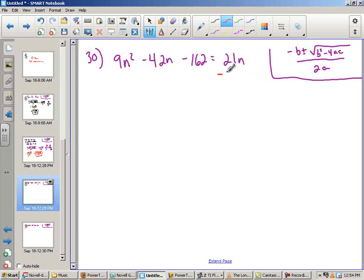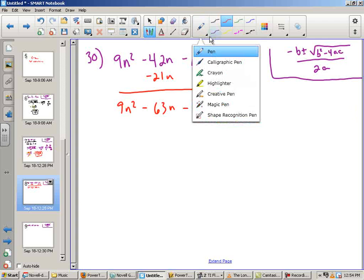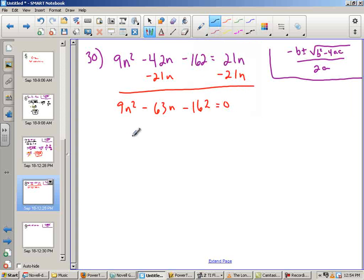Number 30. The first thing I want to do is I want to move this 21n over here. So I have 9n squared minus 63n minus 162 equals 0. This is in a section where I'm allowed to factor. One of the things you always want to look for is, are they all divisible by the same thing? So I'm going to go ahead and divide everything by 9. And I'll get n squared minus 7n minus 18 equals 0.